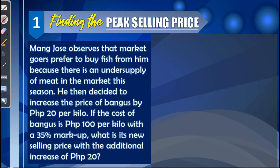First example: finding the peak selling price. Mang Jose observes that market goers prefer to buy fish from him because there is an undersupply of meat in the market this season. He decided to increase the price of bangus by 20 pesos per kilo. If the cost of bangus is 100 pesos per kilo with a 35% markup, what is its new selling price with the additional increase of 20 pesos?